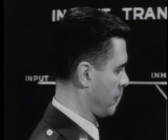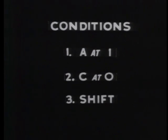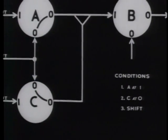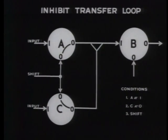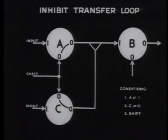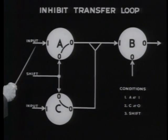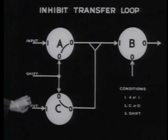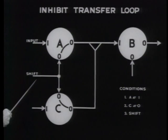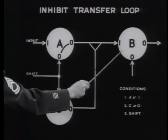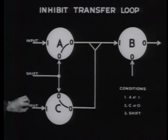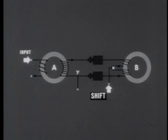In order to transfer a binary one from core A to core B, three conditions must be met: core A must be at one, core C must be at zero, and the shift pulse must be applied. In other words, assuming that the three cores are initially at zero, if there is a non-dot input at A and no such input at C, then the shift pulse will transfer a one from A to B. But if the input does come in at C, there will be no transfer.